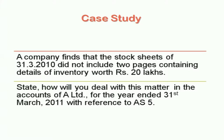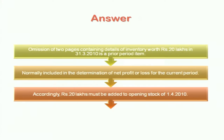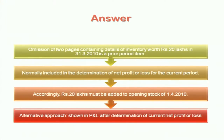A practice question: a company finds that stocks of 31st March 2010 did not include inventory of 20 lakhs — that means closing stock is wrong by 20 lakhs. How will you deal with this in the next year? Both options are allowed: you can either add 20 lakhs in the opening stock, or alternatively show it in the P&L separately as a prior period item of 20 lakhs as expenses.